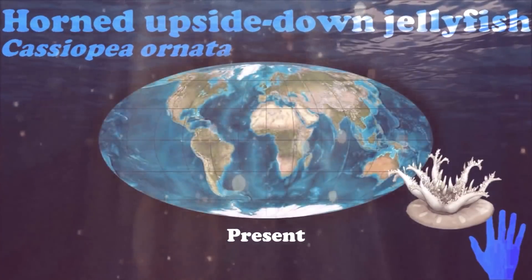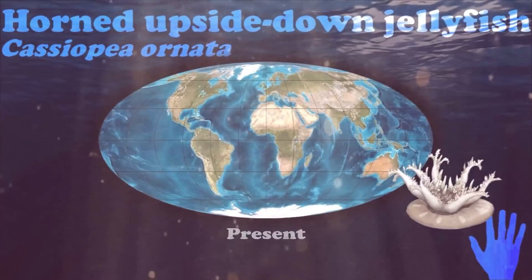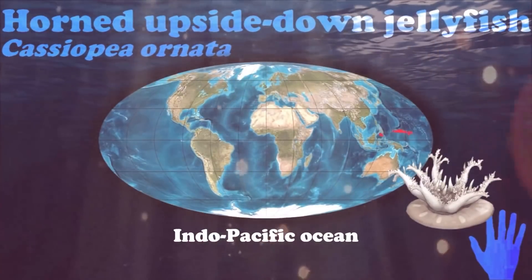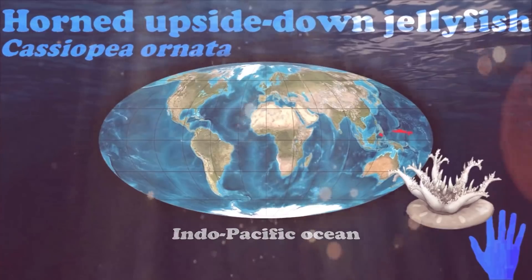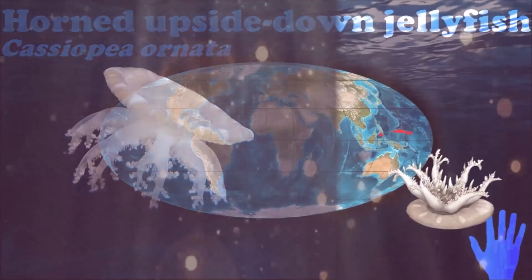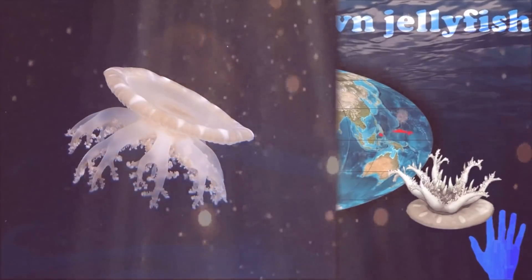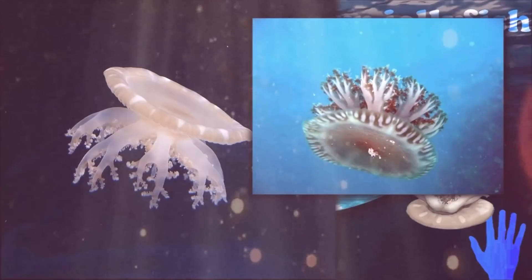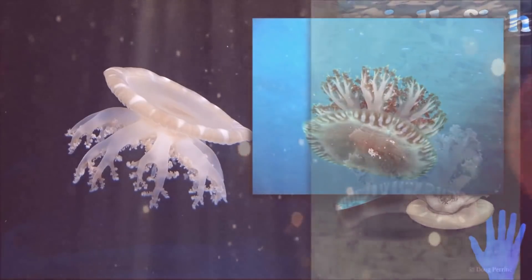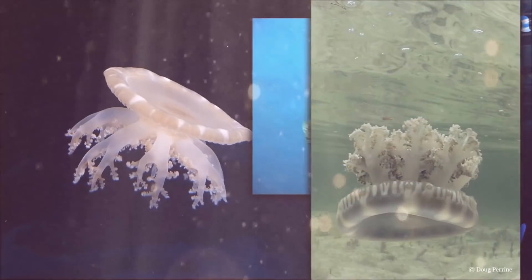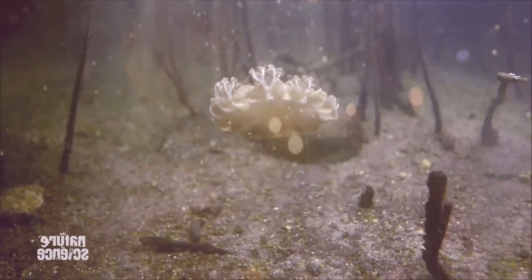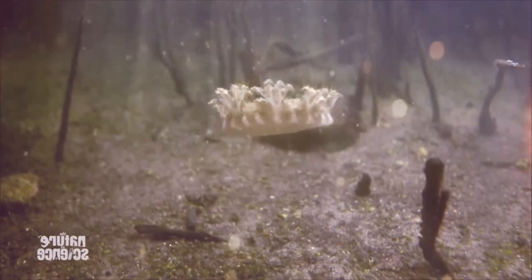Cassiopeia jellyfish usually live upside down on the bottom, which has earned them their common name. These jellyfish partake in a symbiotic relationship with photosynthetic dinoflagellates and therefore must lay upside down in areas with sufficient light penetration to fuel their energy source.